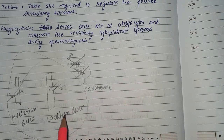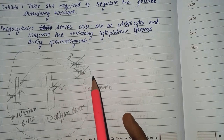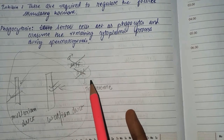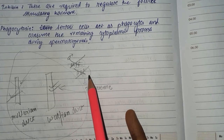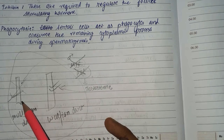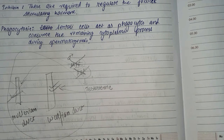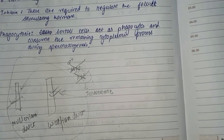Androgen binding protein binds with testosterone and helps in the development of the Wolffian duct. Always remember that the Wolffian duct only develops in the presence of Mullerian inhibiting factor and androgen binding protein, but the Mullerian duct always develops passively — it does not require any active hormonal participation.